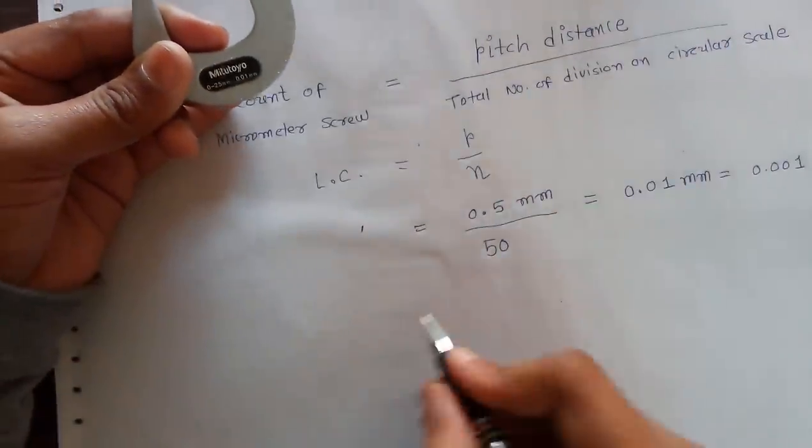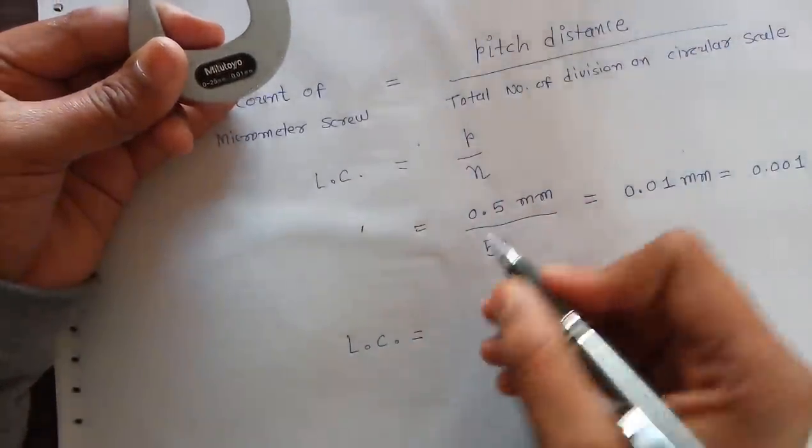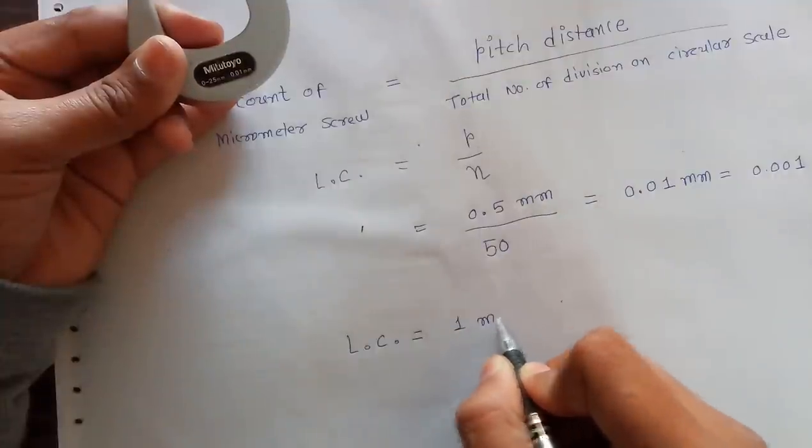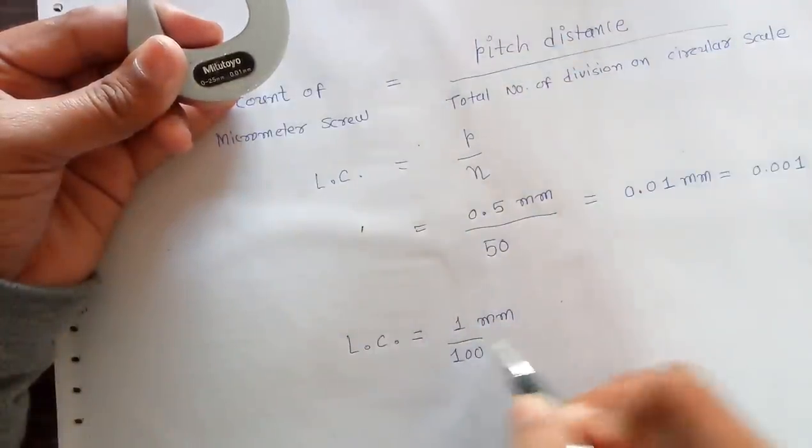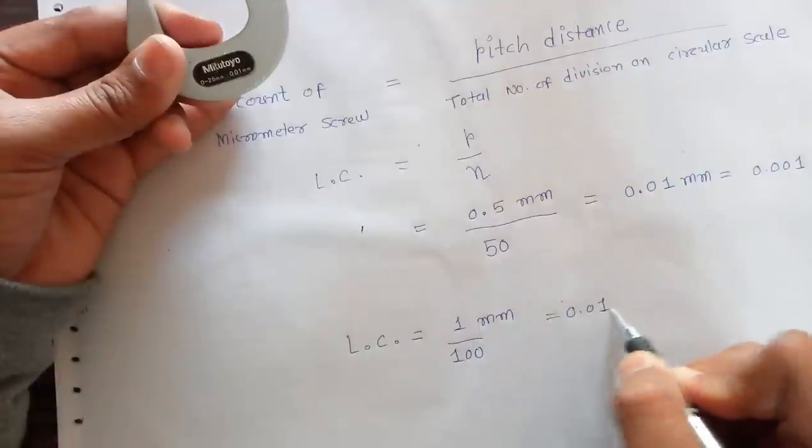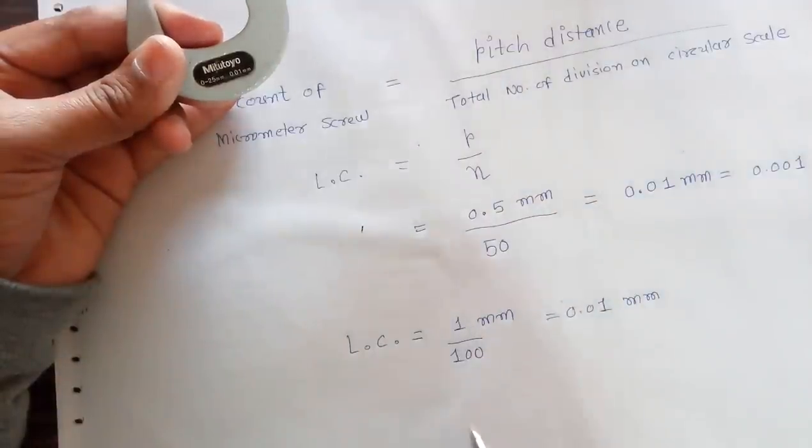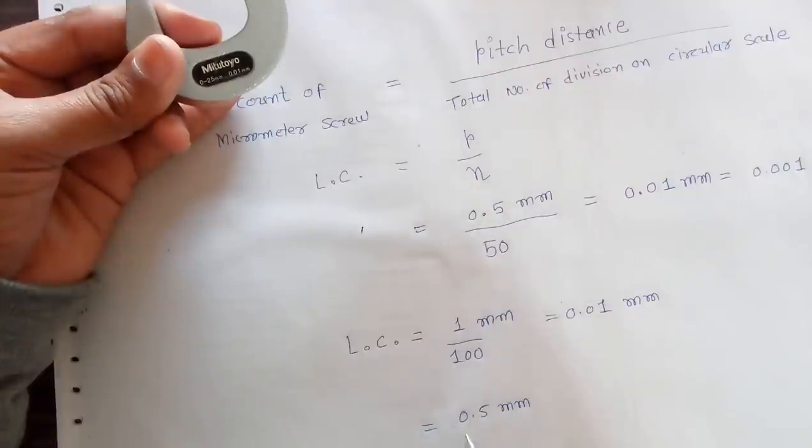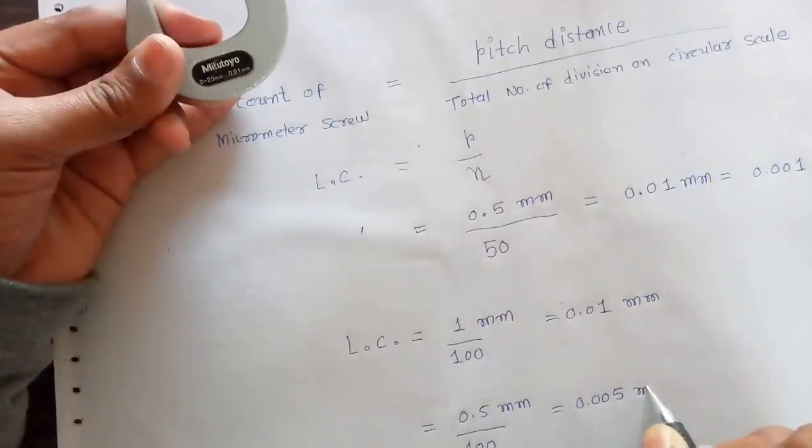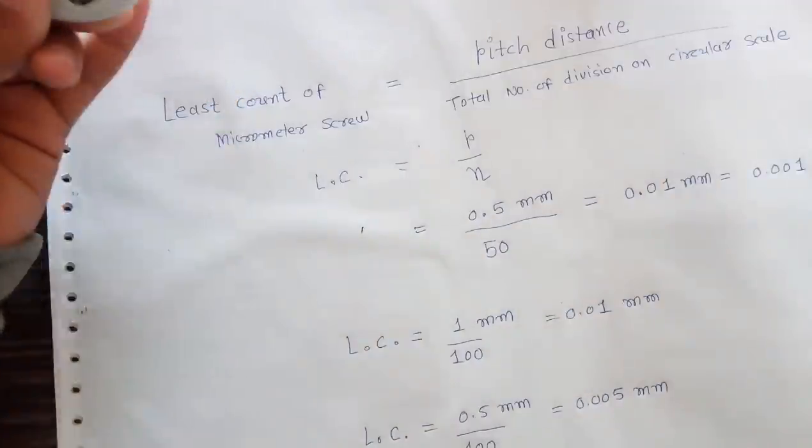For more example: if least count, pitch distance is 1mm, and total number of division on circular scale is equal to 100, we can also find out the least count 0.01mm. If pitch distance is equal to 0.05mm and total number of division on circular scale is equal to 100, so 0.005mm is least count of micrometer screw.